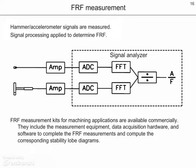In order to measure a frequency response function, we first measure the accelerometer and hammer signals using a signal analyzer. As shown in the schematic, there are amplifiers which amplify the acceleration and force signals. Then an analog to digital conversion step is used to sample the data. This time domain data is converted into the frequency domain using the Fourier transform, or FFT, and then those two signals are divided in order to give the frequency response function. Frequency response function measurement kits that include the required hardware and software are available commercially.